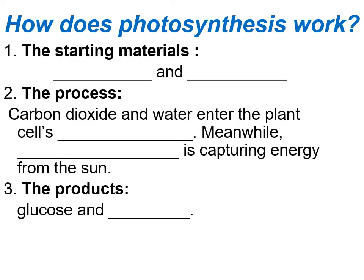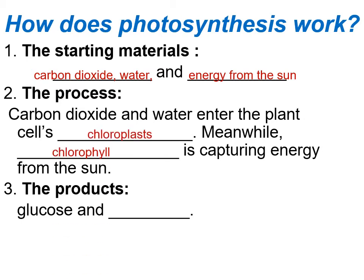How exactly does photosynthesis work? You start with your starting materials: carbon dioxide, water, and energy from the sun. These go into the plant's chloroplasts. Meanwhile, the chlorophyll is capturing energy from the sun, and chemical reactions produce glucose and oxygen. Oxygen is a waste product — the plants release it — and that's why plants give off oxygen, which is good for us because we breathe oxygen.